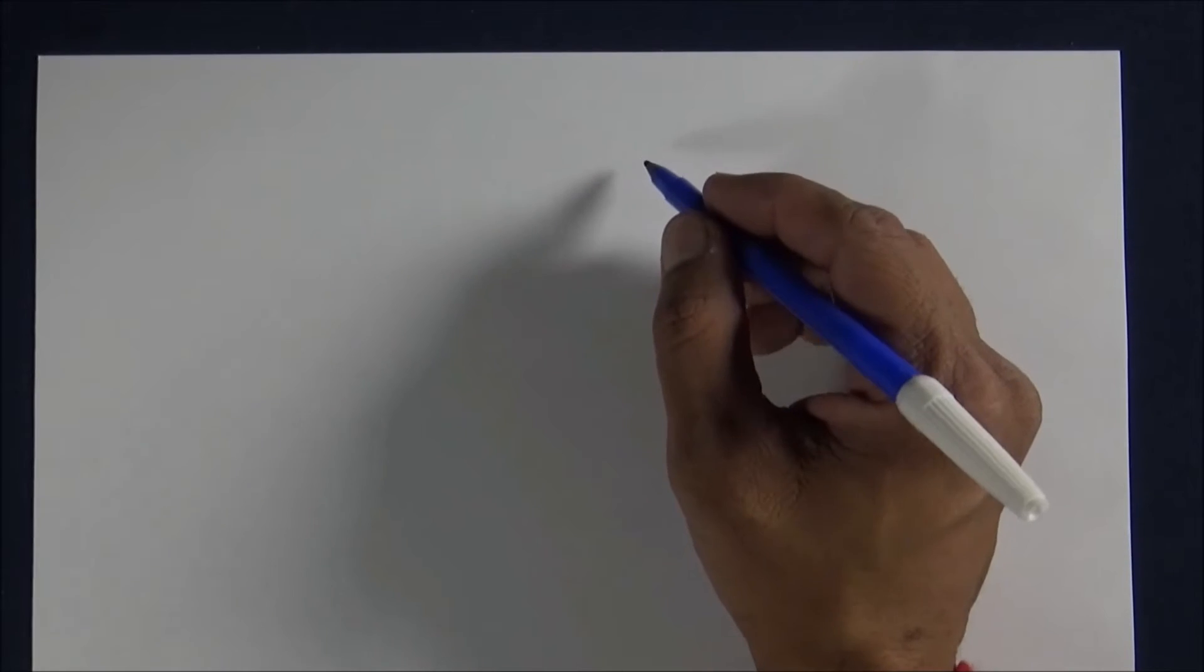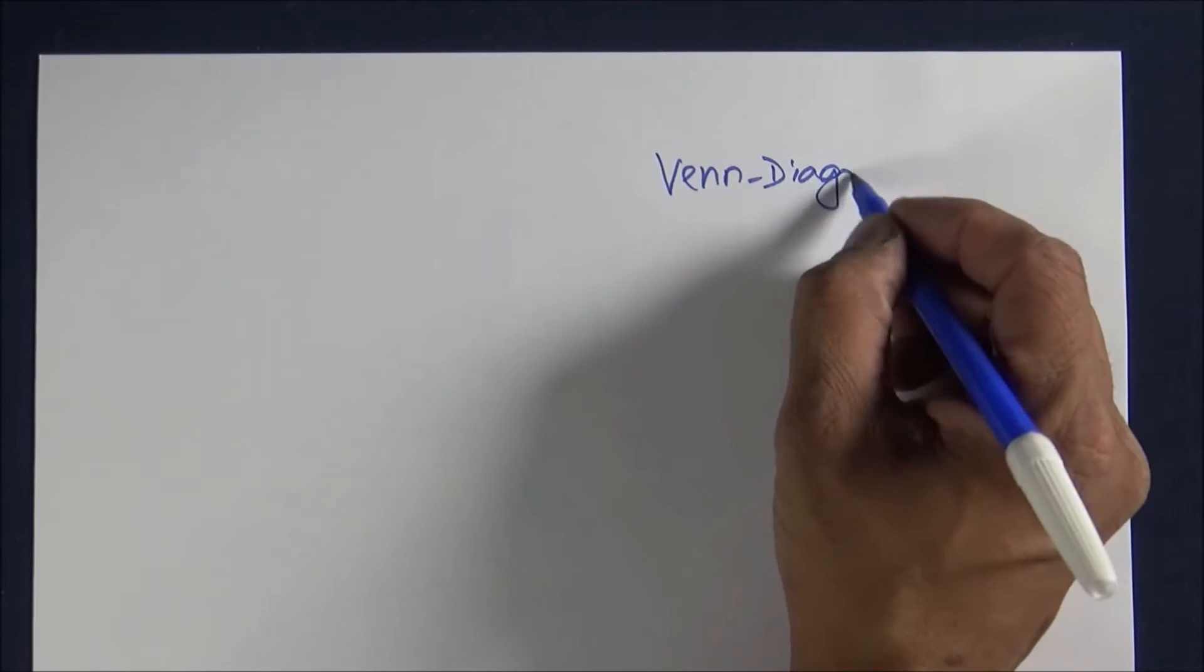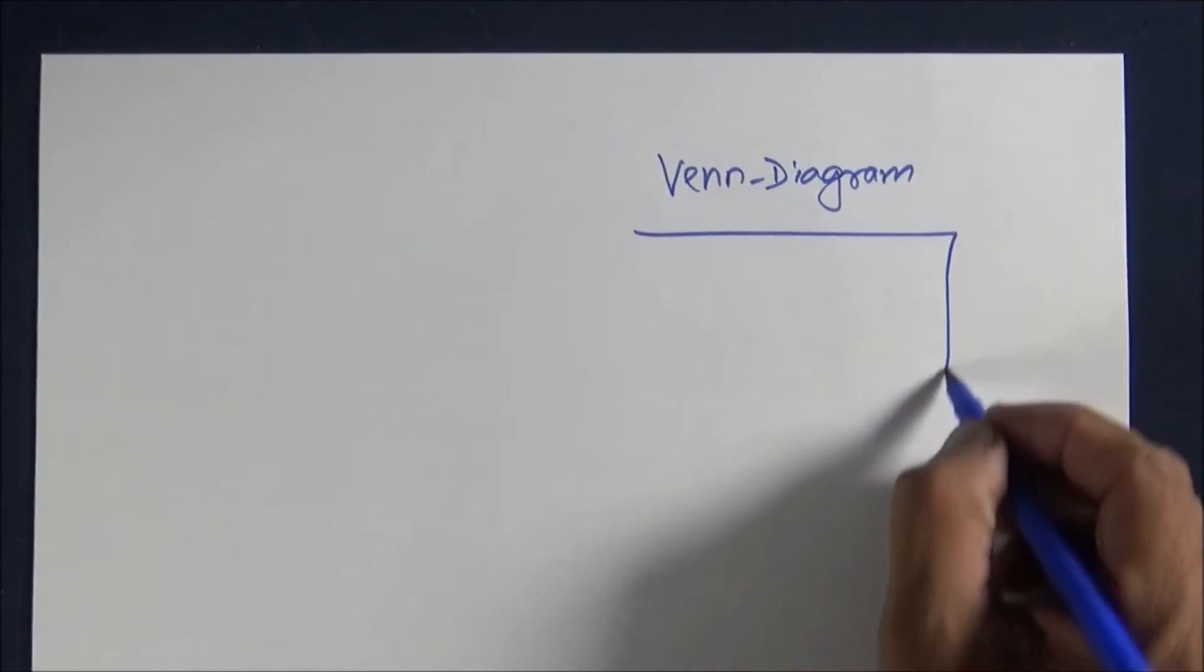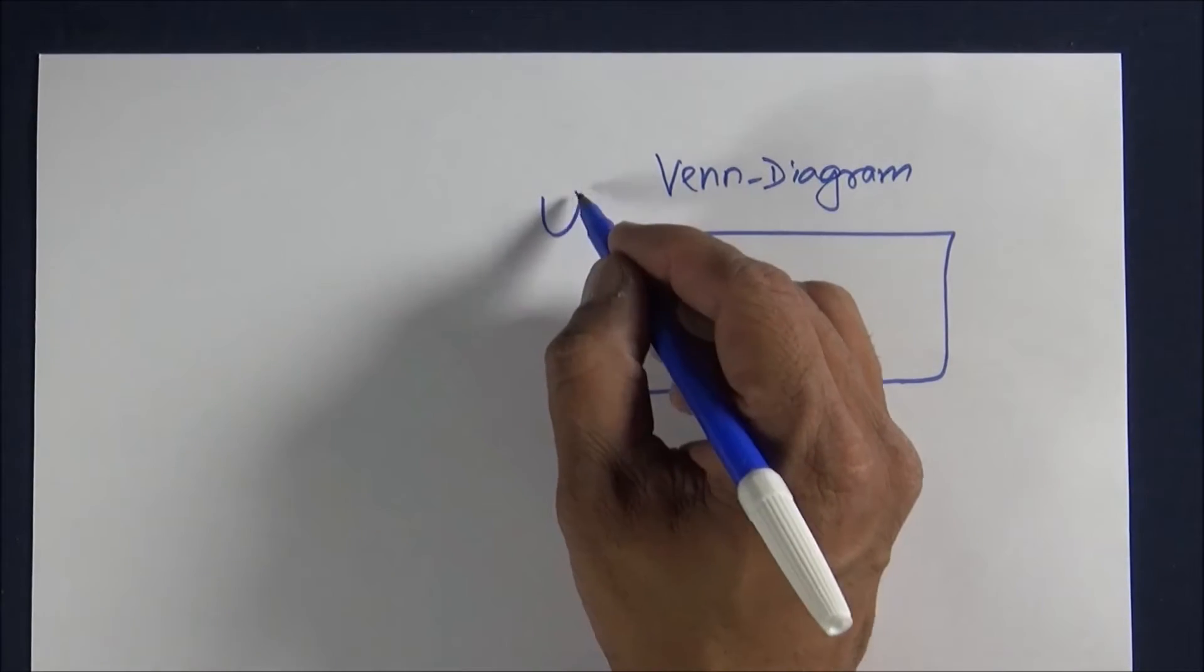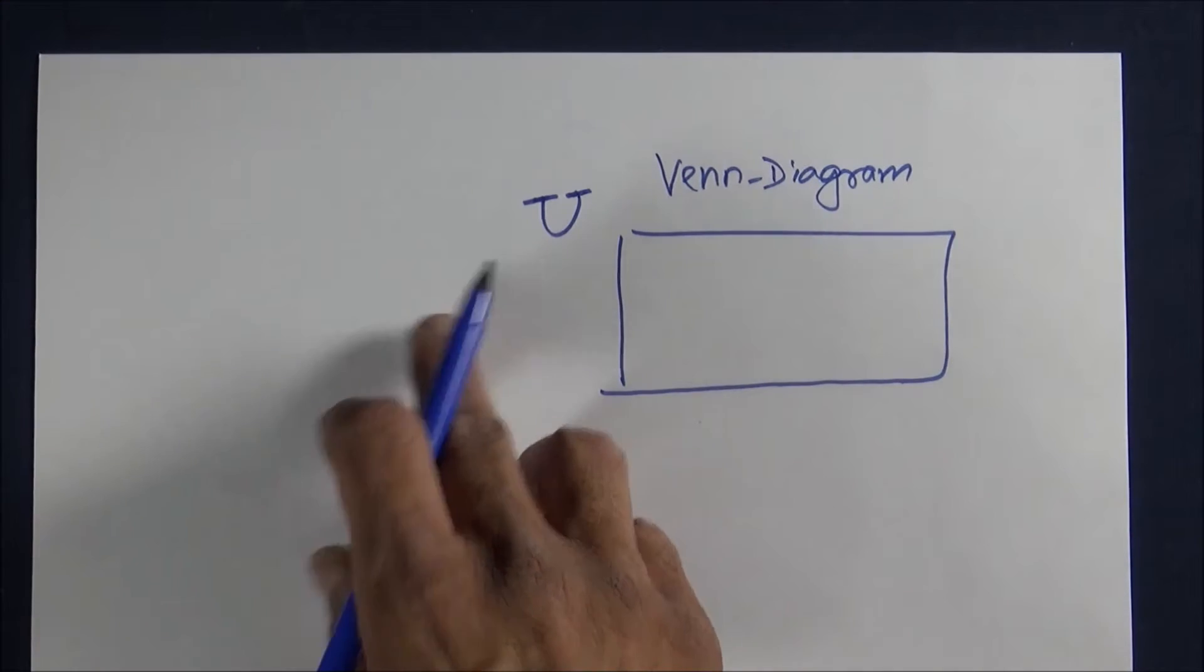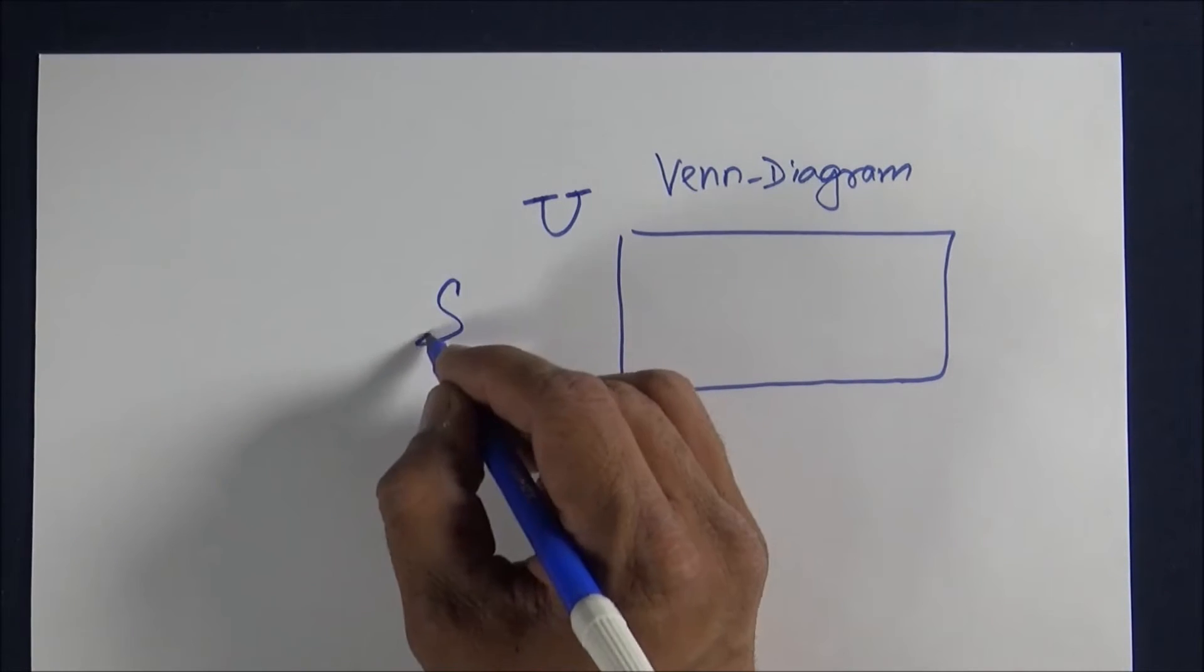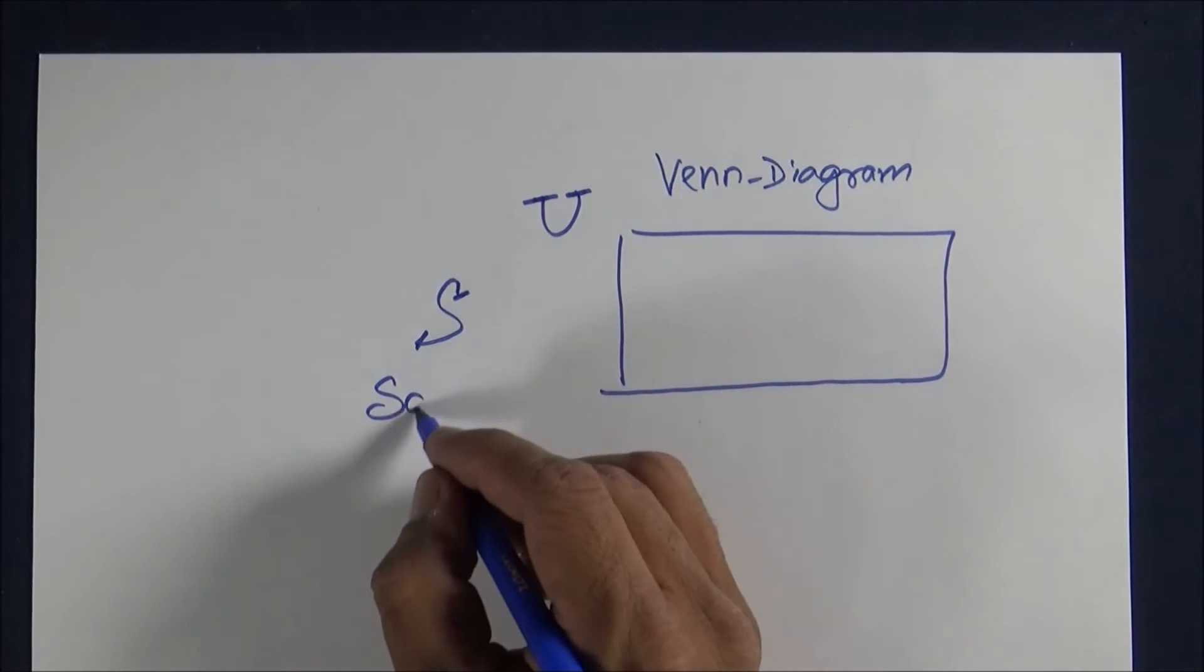If you know about sets, you know that the set containing all the sets is called the universal set. So I'm making a Venn diagram for you. This is the Venn diagram and this is called the universal set. The same thing in probability is denoted by S, meaning sample space.